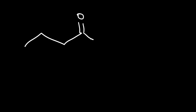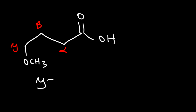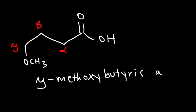Go ahead and try this example. Write the common name and the IUPAC name. This is the alpha carbon, this is beta, and this is gamma. So the common name is going to be called gamma-methoxybutyric acid.